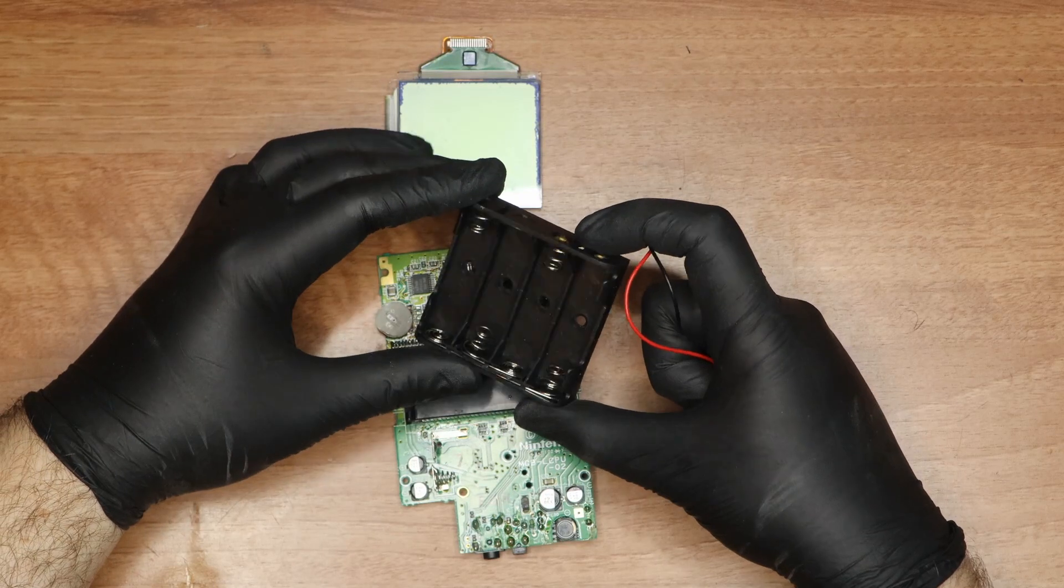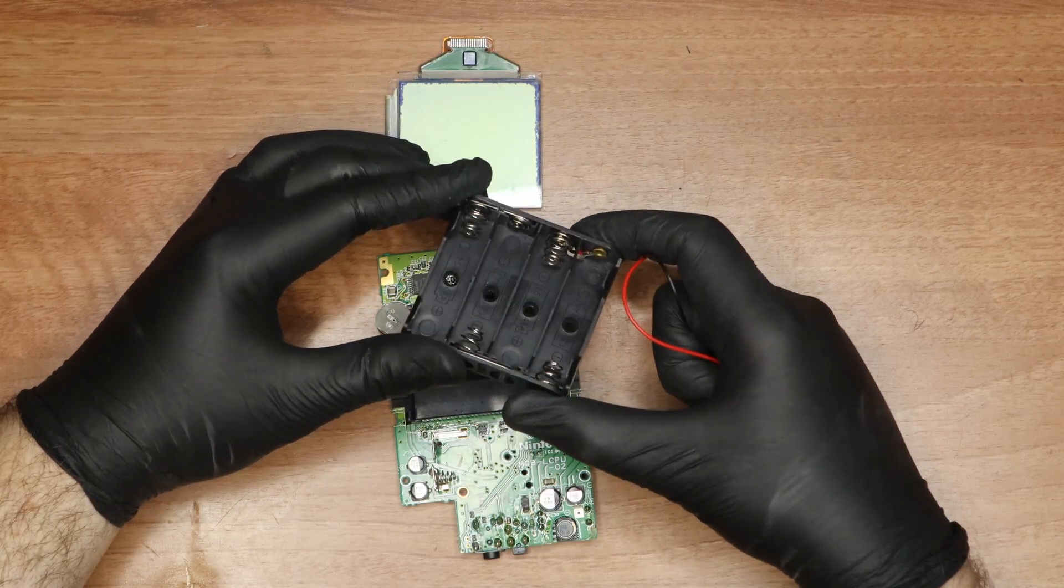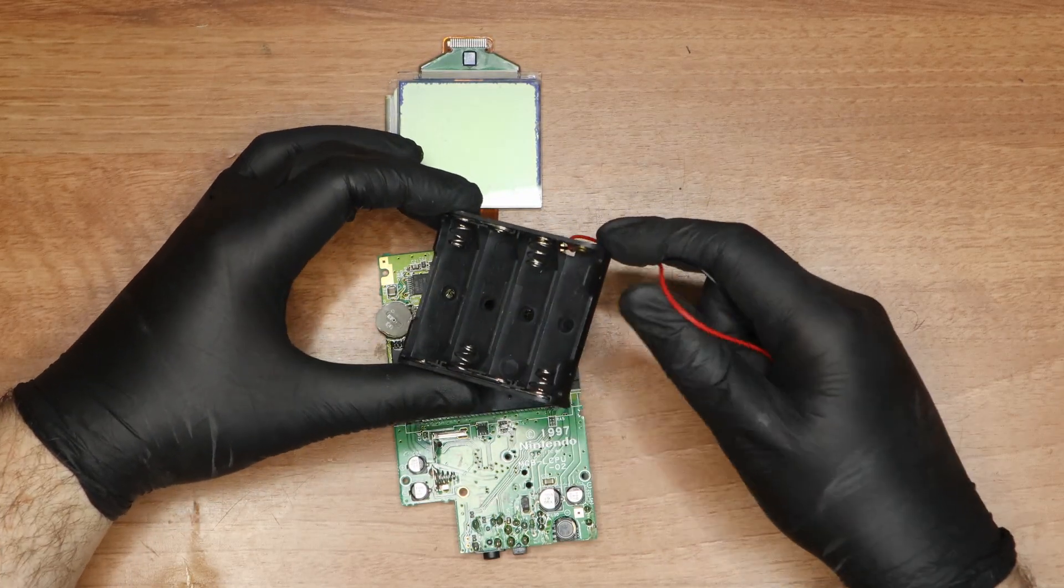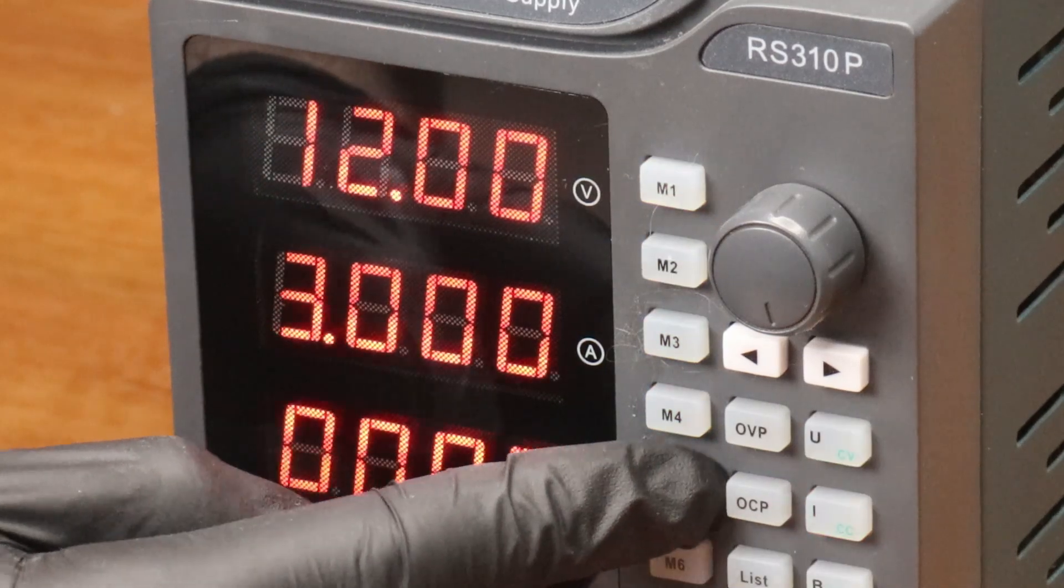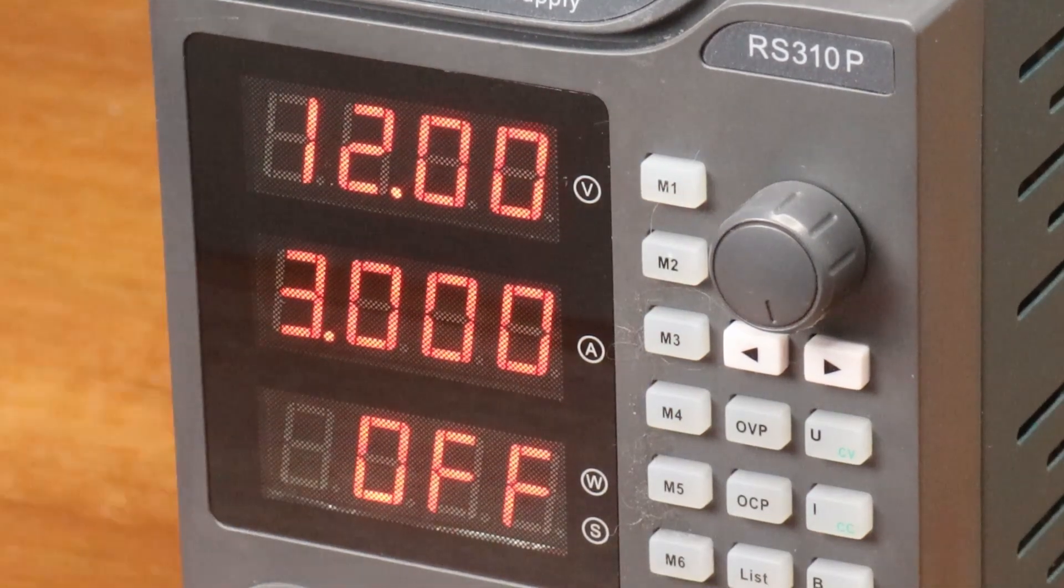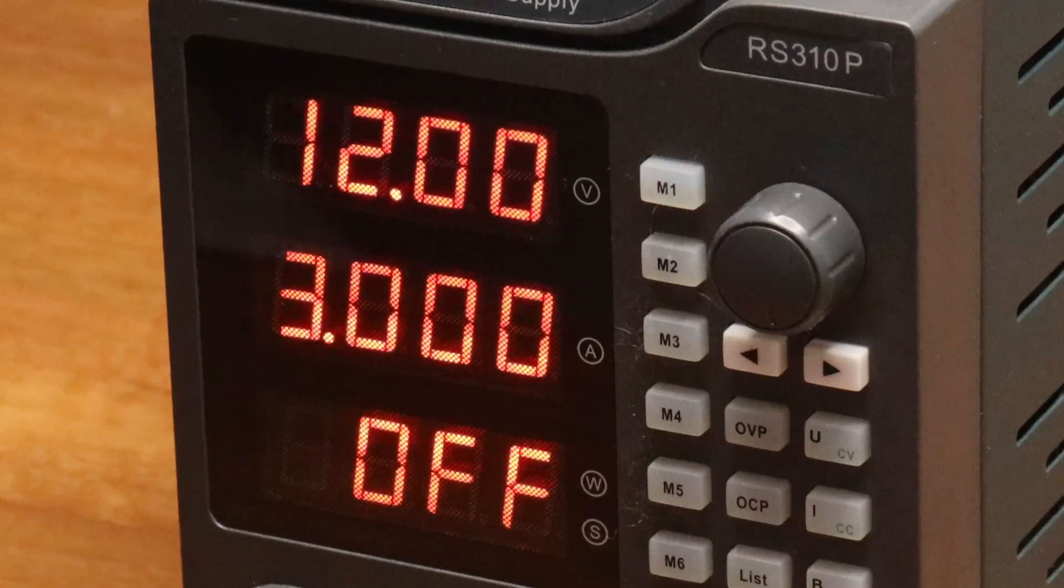You might have seen people using disembodied battery compartments for this purpose, but the drawback is that you need a separate compartment for each voltage. On the other hand, bench power supplies are adjustable, and you can easily see how much current the device is drawing to narrow down the problem.